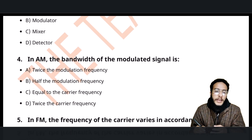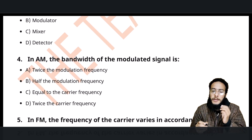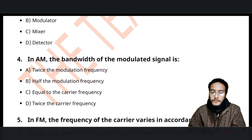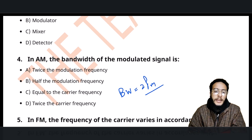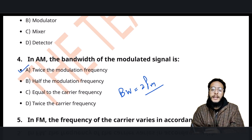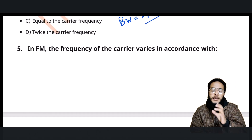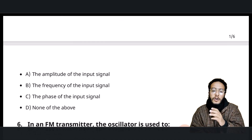The next question: in AM, what is the bandwidth of the modulating signal? As I have mentioned in previous videos, the bandwidth is calculated as twice the modulating frequency. So twice the modulating frequency will be the correct option.